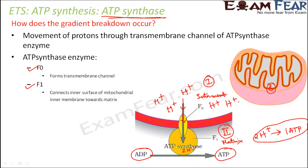When 2 H+ ions have moved through, ADP can get converted into ATP — that phosphorylation can take place. To summarize: first, a proton gradient develops because of the passage of electrons through the electron transport chain. Once the gradient develops, ATP synthase enzyme gets activated on the inner membrane. The gradient breakdown then occurs, releasing energy, which in turn helps in synthesizing ATP.